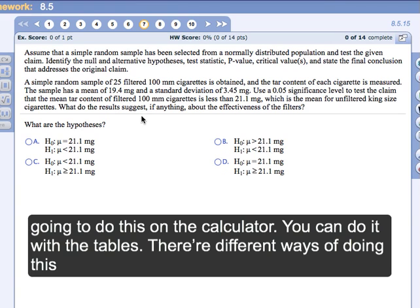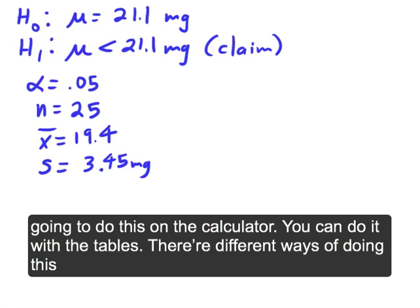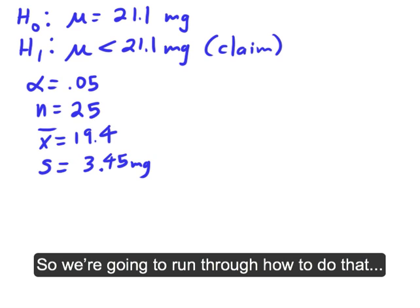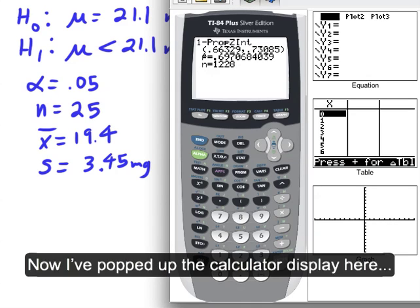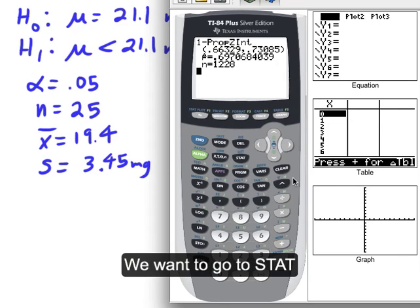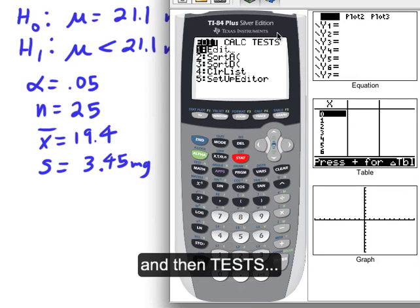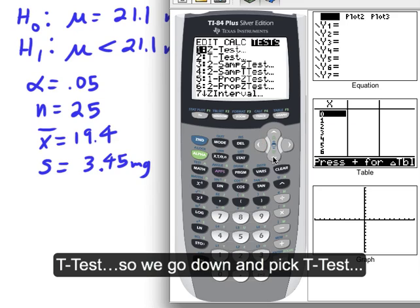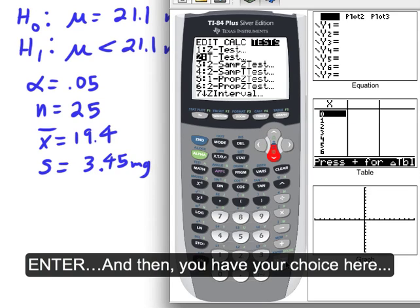And so that looks like everything we need here to do the test, and we're going to do this on the calculator. You could do it with the tables. There's different ways of doing this. We're going to do it on the calculator, on the TI-83 or 84. So we're going to run through how to do that. Now I've popped up the calculator display here, and where we want to go is you're going to go to stat, and then you're going to go to tests. And we're going to pick, because it's a sample deviation, we know it's a t-test. So we go down and we pick t-test, enter.